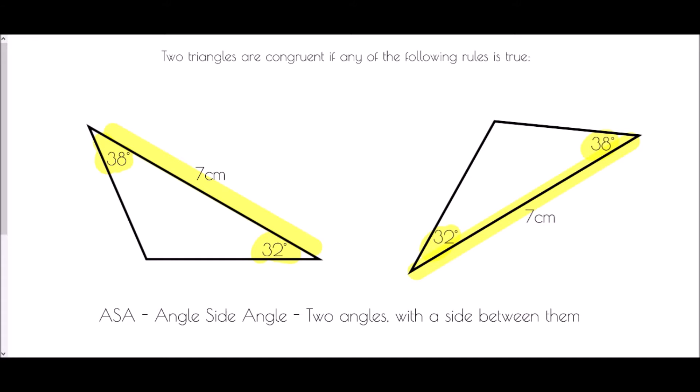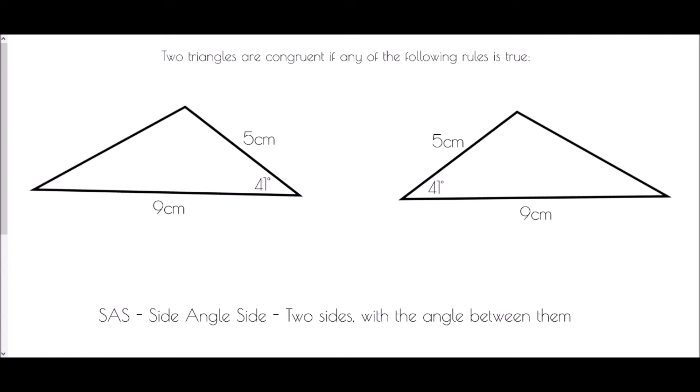Therefore those two triangles are congruent. We also have the SAS rule — Side Angle Side — meaning if two sides of a triangle and the angle between them are the same, the triangles are congruent. Here we have a nine-centimeter side and a five-centimeter side with an angle of 41 degrees between them. The other triangle also has a five- and nine-centimeter side with the same angle between them — this is actually a reflection, but they are congruent by SAS.